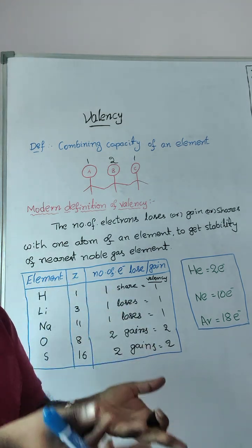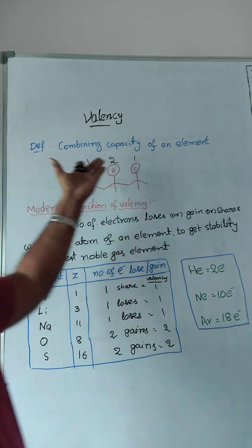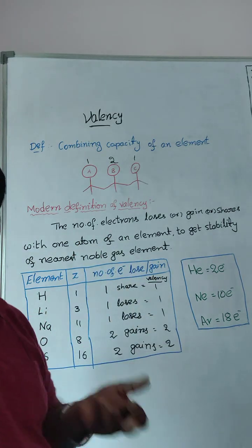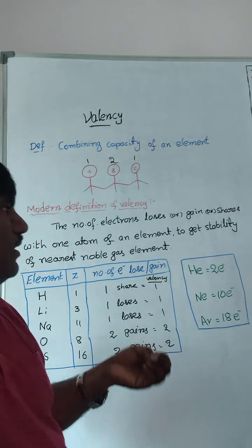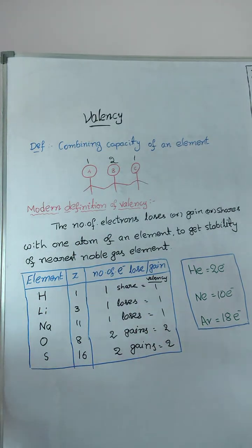Valency means number of bond formation. One is nothing but one bond forming, two is nothing but two bonds forming. Valency is nothing but number of bonds.